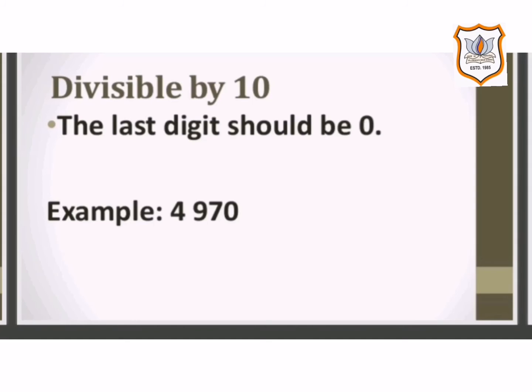The next rule is divisible by 10. If a number has 0 in its units place, then it is divisible by 10. For example, 4970 has 0 at the units place, so it is divisible by 10.